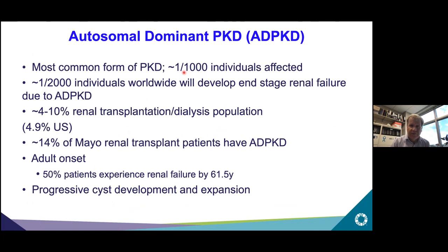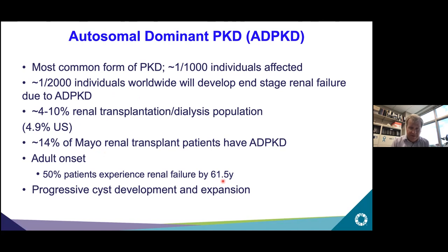ADPKD is a common disease: about 1 in 1,000 individuals are affected, and maybe 1 in 2,000 develop end-stage renal disease. About 4% to 10% of people requiring renal transplant or dialysis around the world have this disease — about 4.9% in the U.S., and 14% of transplant patients at Mayo. It's an adult-onset disease that develops over the patient's lifetime, with an average age of requiring dialysis or transplant of 61.5 years, though progression is quite variable.